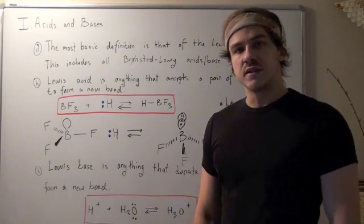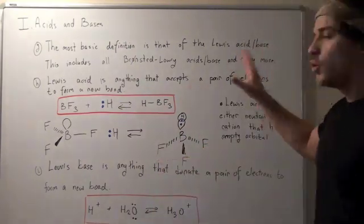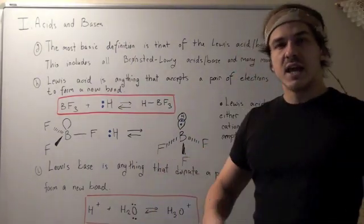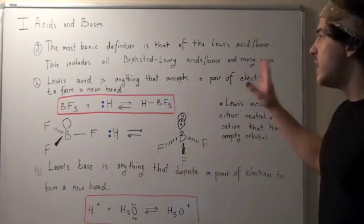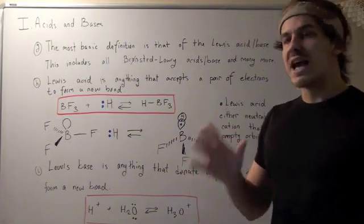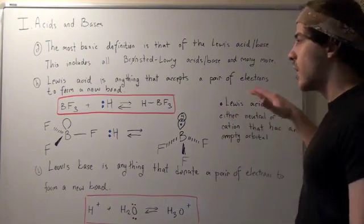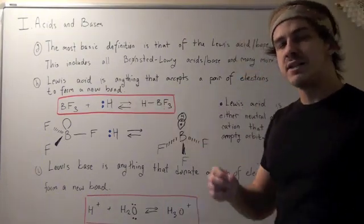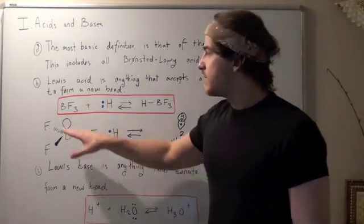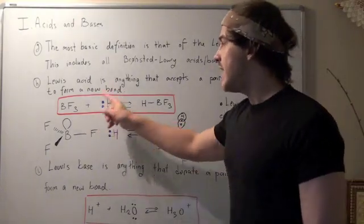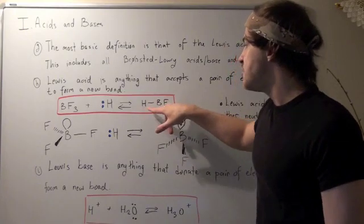Our third and final definition of an acid and a base is the most broad definition, called the Lewis Acid-Base Concept. This includes all the Bronsted-Lowry acids and bases, and many more. A Lewis Acid is anything that accepts a lone pair of electrons to form a new bond, usually called a coordinate-covalent bond. For example, BF3 plus a molecule with a lone pair of electrons forms a coordinate-covalent bond, giving HBF3.